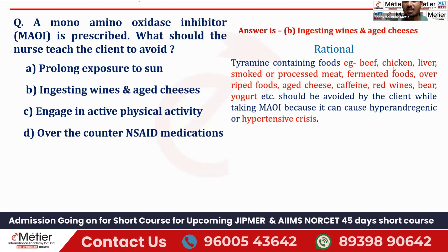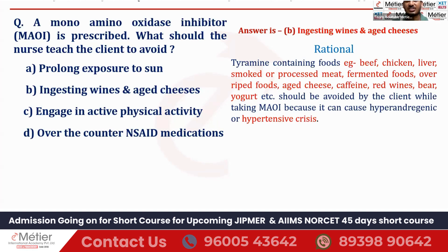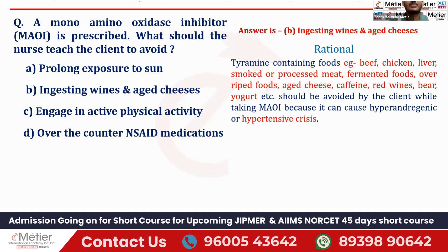Here you can see the examples of tyramine-rich foods — I have highlighted everything in red color, please make a note of it. Pause the video and make a note. These are vital points: chicken liver, smoked and unprocessed meat, fermented foods, overripe foods, aged cheese, caffeine, bread, wine, beer, yogurt, etc. All these foods come under tyramine-containing foods and have to be avoided. If they are not avoided, hypertensive crisis will take place — it is also called hyperadrenergic crisis.